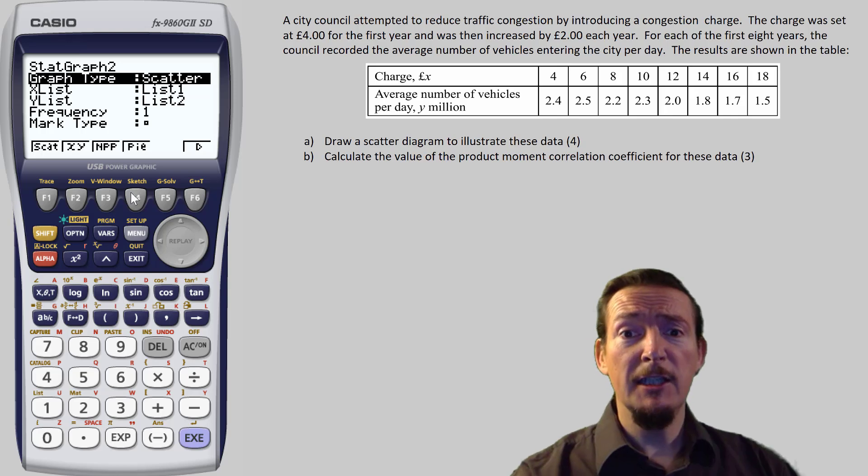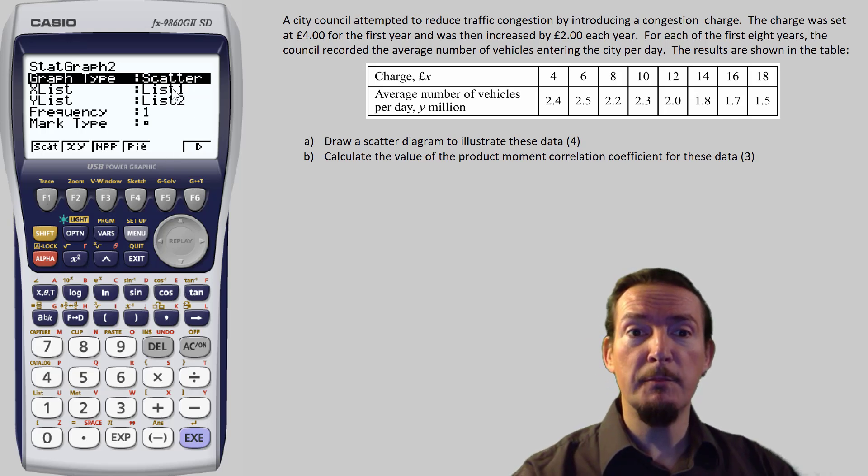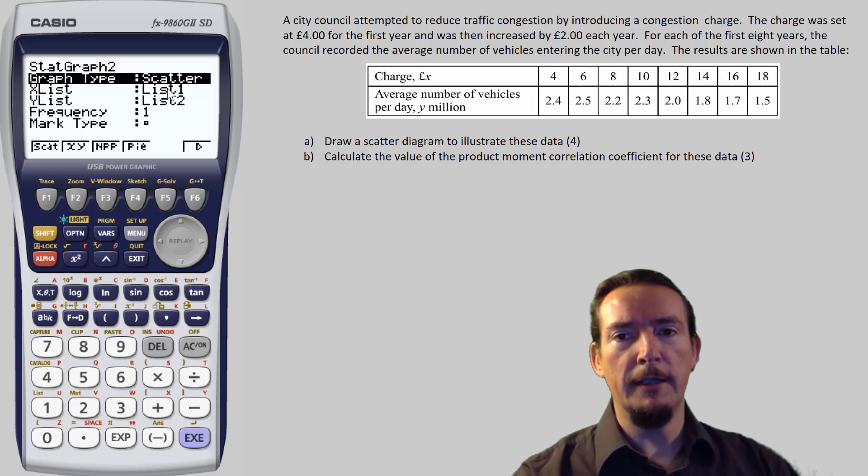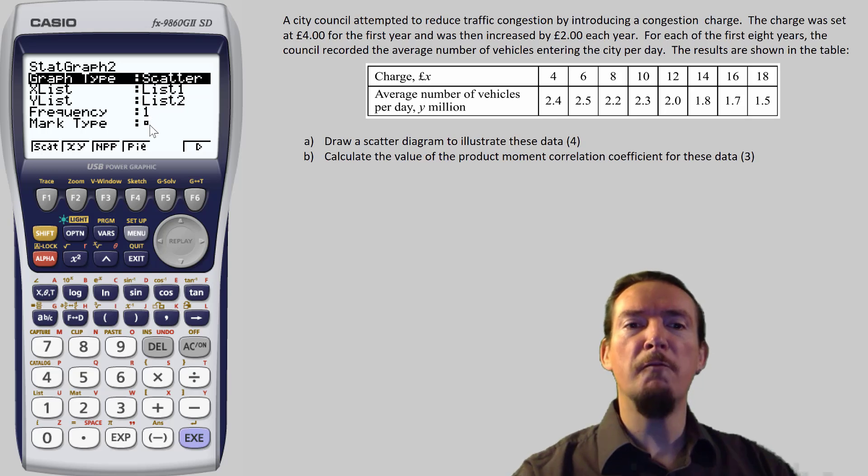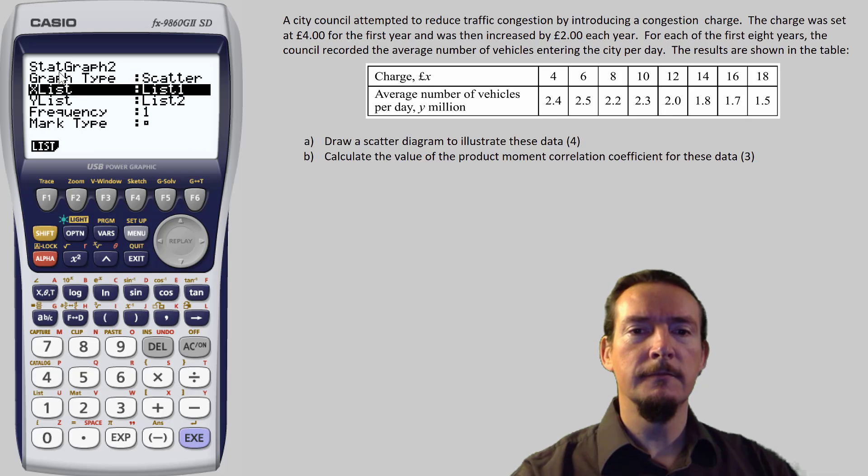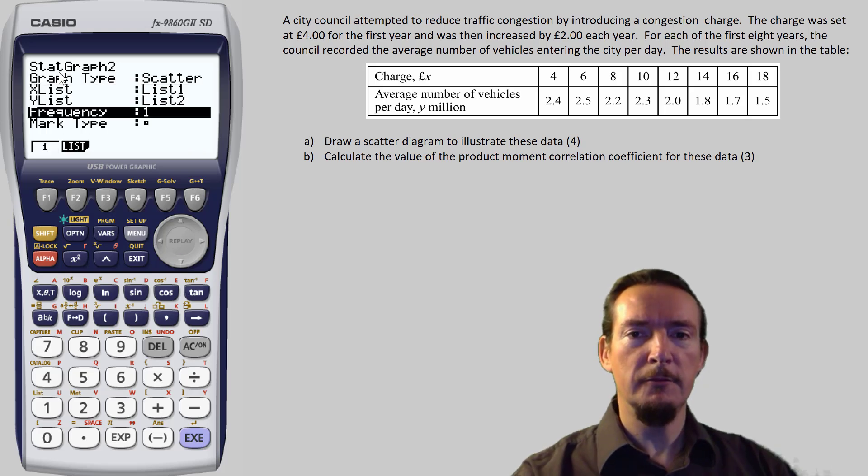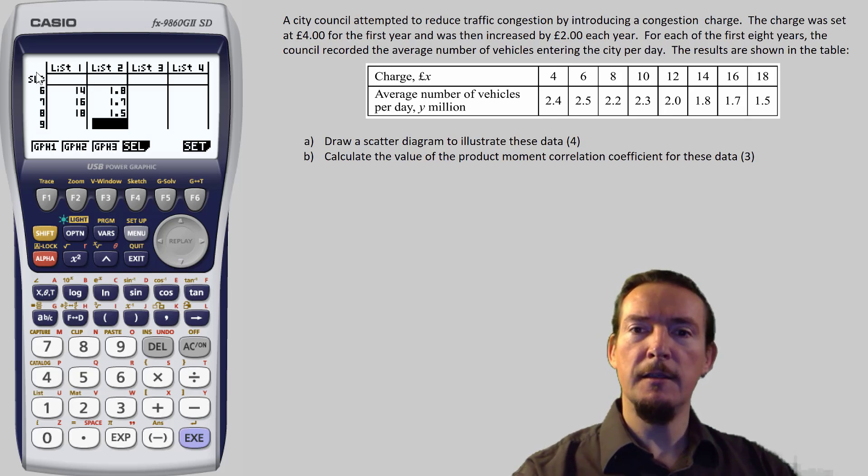Now, for the scatter graph, you will need to tell the calculator where to pull its x and y values from, so we are using list 1 and list 2 for these. The frequency should be 1, and you can choose what sort of mark type that you want to show on the graph. Once you have this all set up, press escape and select the preset you used. Now I used graph 2, so I'm going to press F2.